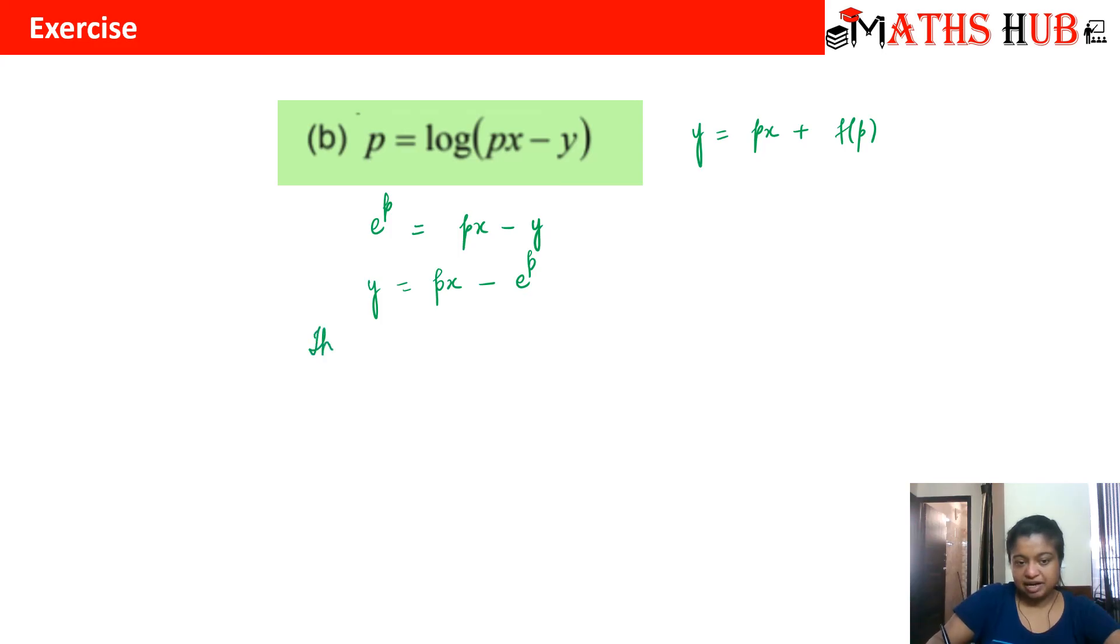Now this is Clairaut's equation. If it is Clairaut's equation, then what is the solution? The solution is simply put P equal to constant. When you put P equal to constant, your solution comes out to be Y is equal to C of X minus E raised to power C. That becomes your answer.